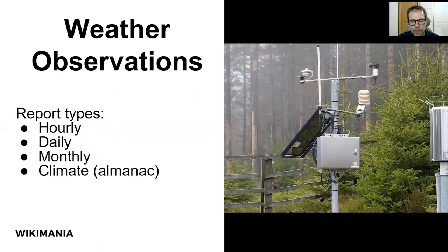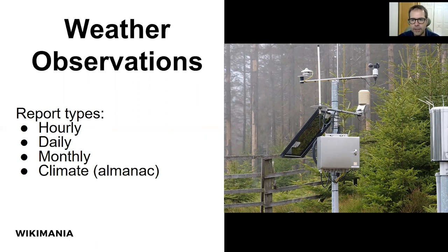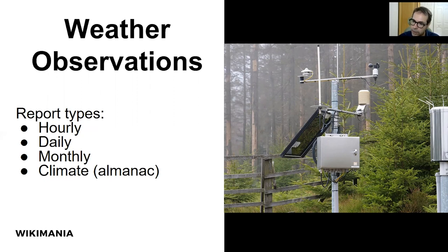What are weather observations? Well, in order to make a weather forecast, you need observations most of the time coming from instruments like those shown in this picture. They measure temperatures, atmospheric pressure, precipitation amount, etc. The devices are grouped in one location, which is called a weather station. Typical time intervals for reports from weather stations are hourly, daily, and monthly. It is also possible to make a summary since the station exists — for example, for record values. This is called an Almanac Summary.